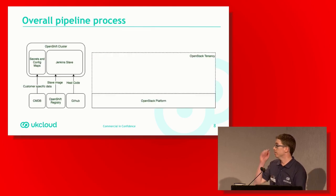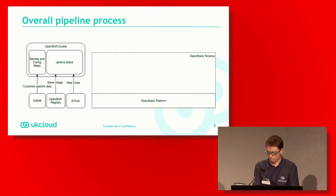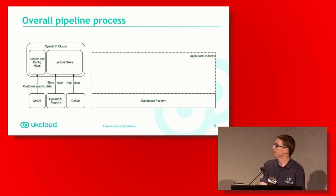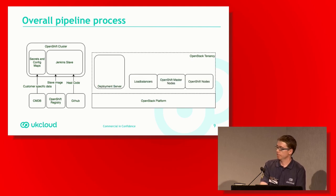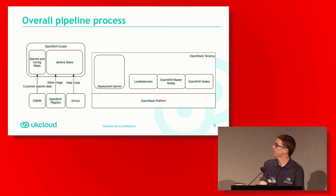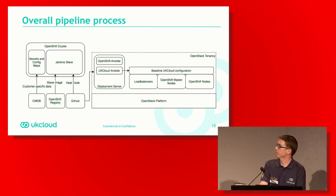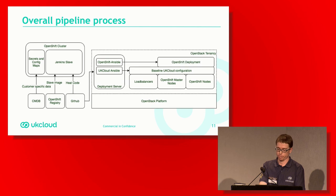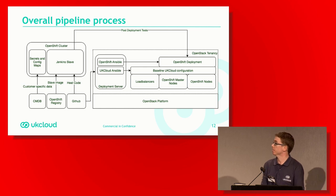This is the end-to-end process. We pull CMDB information into secrets and config maps, pull the Jenkins slave from the OpenShift registry, and pull our code from GitHub. The code gets merged and then is used to deploy the actual infrastructure onto OpenStack. On the deployment server, we pull in our repos from GitHub again, along with the upstream OpenShift Ansible code, apply our baseline config across the servers, deploy OpenShift on top, do some post-configuration to the cluster, and then carry out deployment testing from outside the cluster.